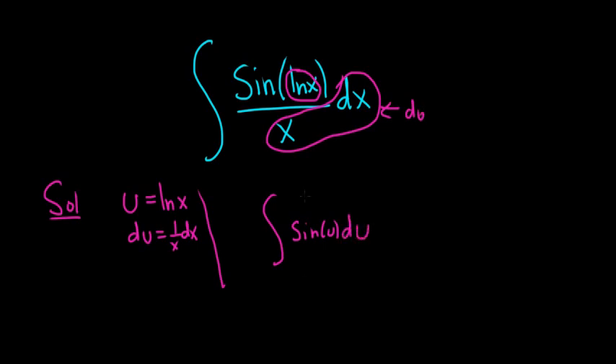So now we have to integrate sine. So we ask ourselves, what's a function whose derivative is sine? Well, the derivative of cosine is negative sine. So there's no negative here, so we have to put a negative here. So negative cosine u plus C.